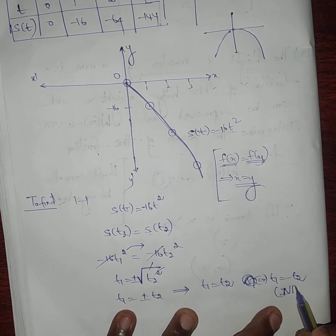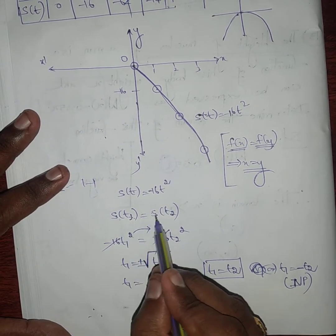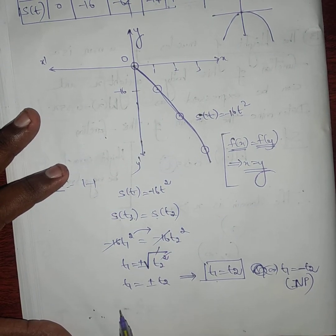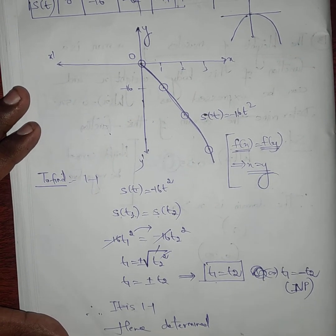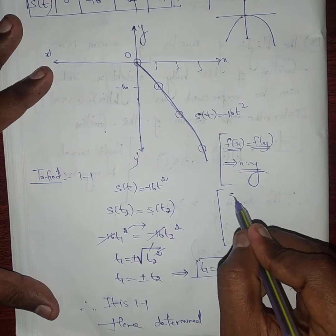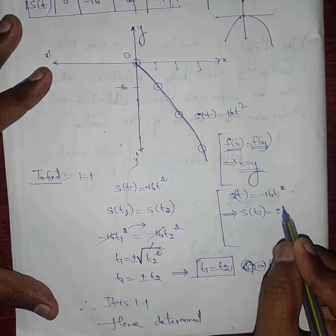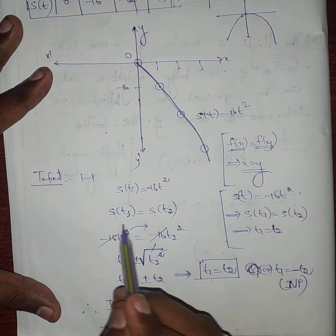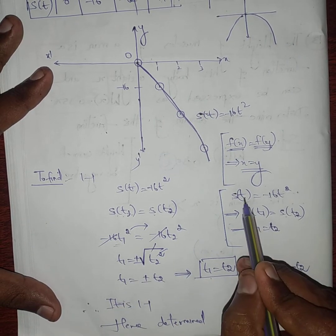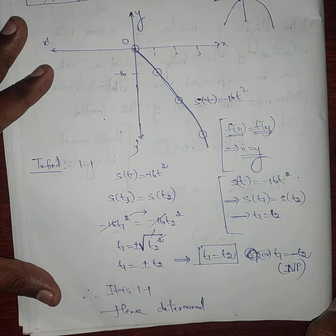The case t₁ = -t₂ is impossible because time cannot be negative. Therefore we are left with t₁ = t₂. Since s(t₁) = s(t₂) implies t₁ = t₂, the function is one-to-one. Hence proved. The key logic: s(t) = -16t², assuming s(t₁) = s(t₂) leads to t₁ = t₂, confirming one-to-one.